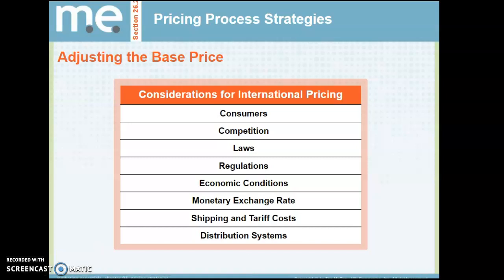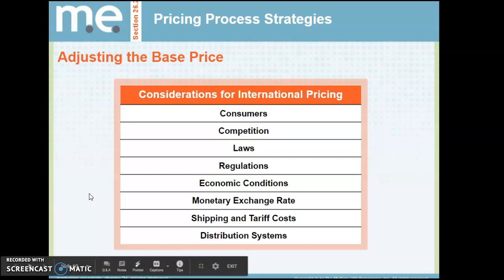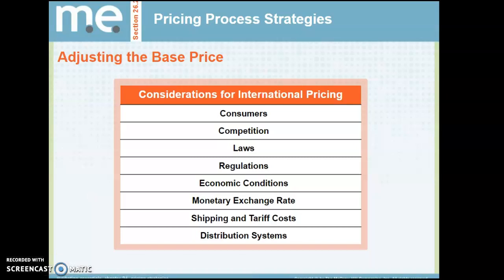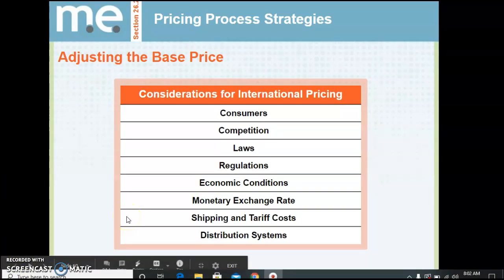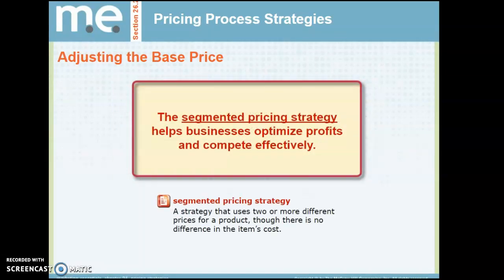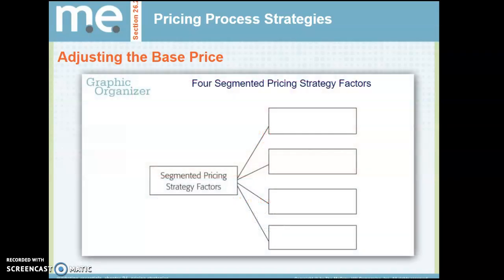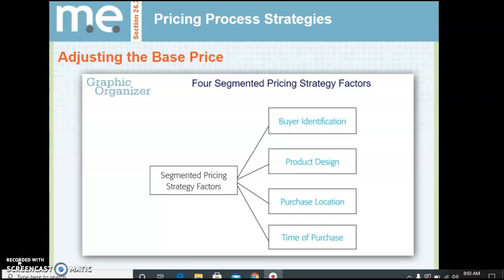Some considerations for international pricing include looking at consumers, competition laws, regulations, and economic conditions — there's a lot to consider when selling internationally. A segmented pricing strategy uses two or more different prices for a product even though there is no difference in the item's costs. Segmented pricing strategy factors include identifying who your buyer is, designing your product, deciding where the purchase location will be, and when the time of purchase will be.